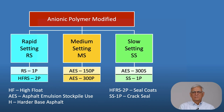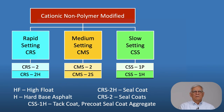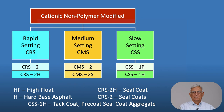AES300P, AES300S, and SS1P are other grade designations. For non-polymer-modified cationic emulsions, we have cationic rapid set, using the letter C to designate cationic — note that there was no letter designation in front of RS when using anionics. CRS2 is grade 2 of a cationic rapid setting emulsion. In the lower right, CSS-1H is a cationic slow setting emulsion with a hard base asphalt.